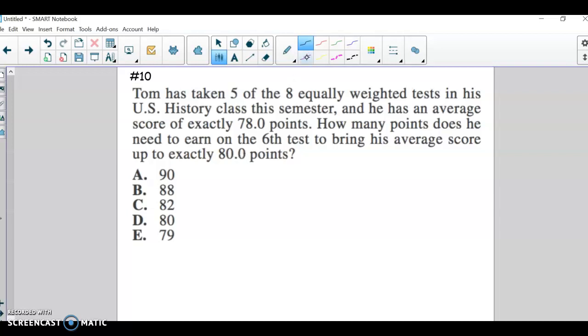Okay, so in the end, he wants to have 6 tests with, excuse me, 80-point average. Okay, so basically what that means is if you have 6 tests times 80 points a test, right, if you average 80, you'd have 80 points for each test.